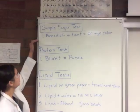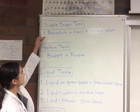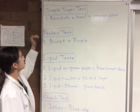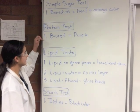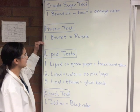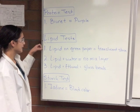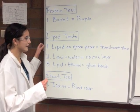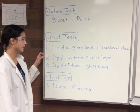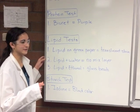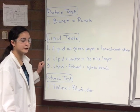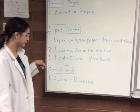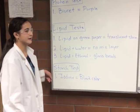One of the tests we'll be doing today is a simple sugar test. You'll use Benedict's solution, add heat, and it will change to an orange color. Another test will be testing for proteins — you'll add Biuret solution and it will turn purple if proteins are present. For the lipid test, you'll rub lipid on green paper and it will leave a translucent stain. You'll also put lipids and water in a tube and shake it — they won't mix. Then put lipid and ethanol in a tube and they'll mix, making things that look like glass. The last test is the starch test: add iodine and it will turn black because starch is present.